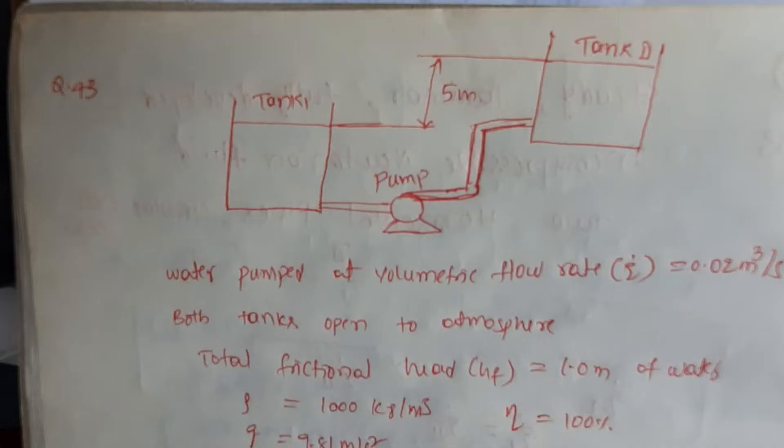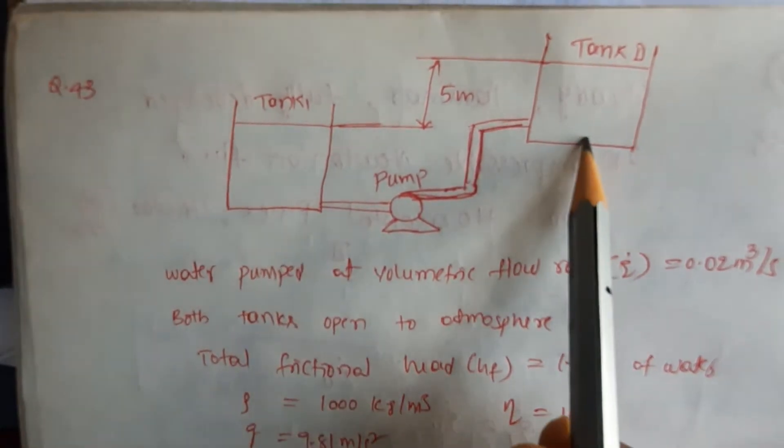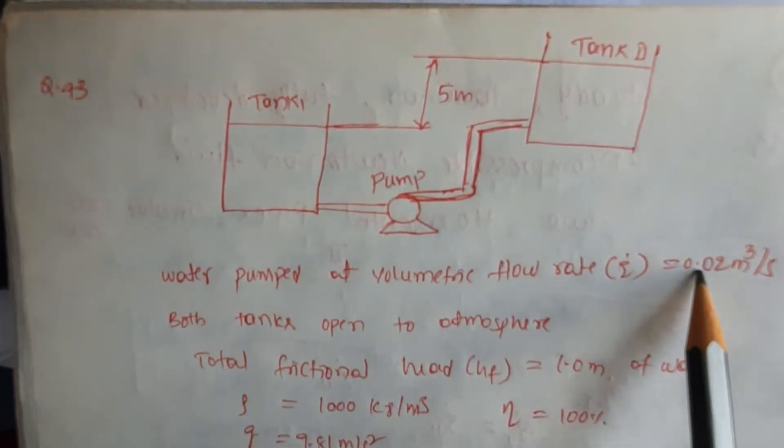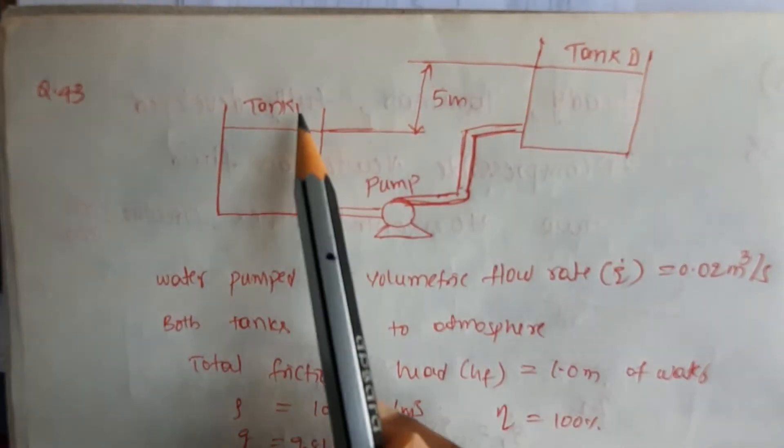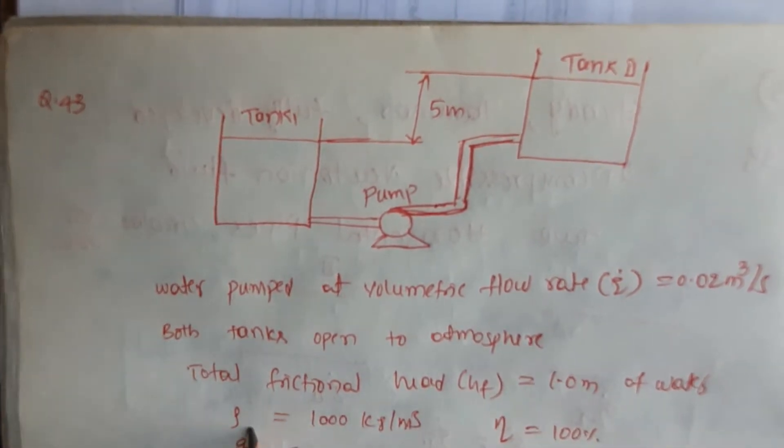Looking at this problem, water is pumped from Tank 1 to Tank 2 at a flow rate of 0.02 cubic meters per second. Both tanks are open to atmosphere. The total frictional head loss is 1 meter of water. Density of water and g are given.